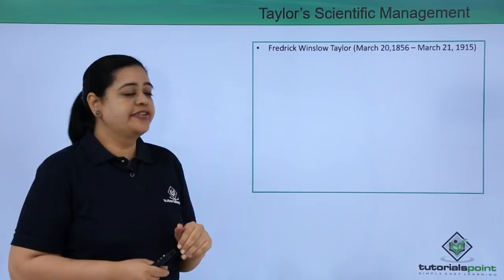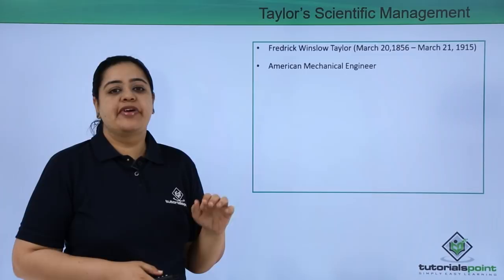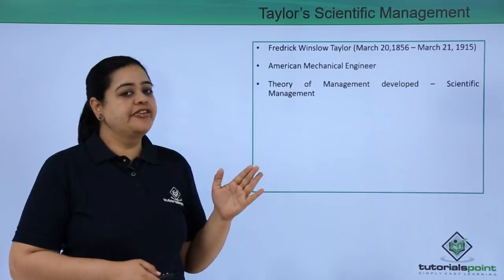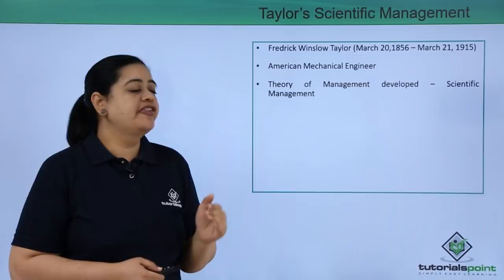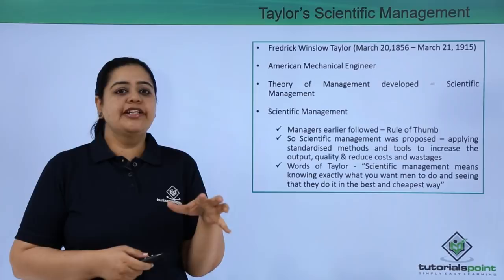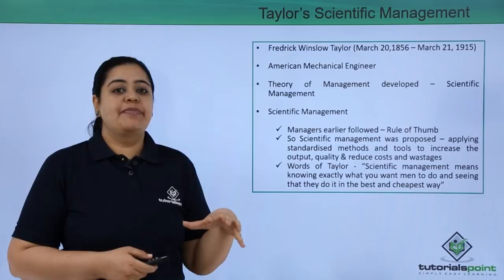He was born in 1856 and he died in 1915. Now, this person was an American mechanical engineer and he was the person who developed the theory of management, which is known as scientific management theory. Remember, most of the time he worked in steel companies. These management principles were observed and experimented — Taylor had actually experimented and seen the observations of his theory before introducing it to the world.